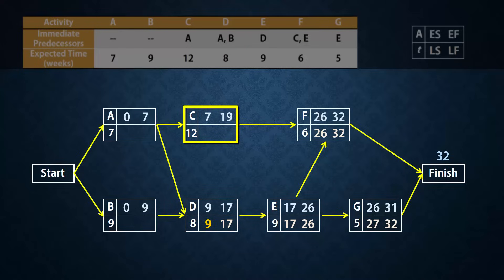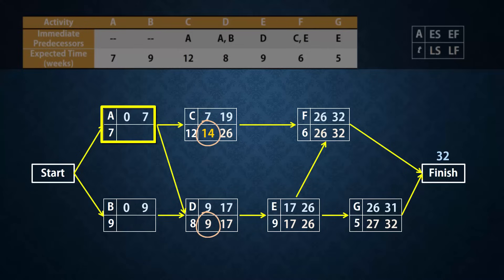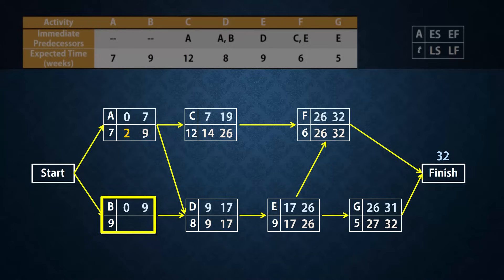Activity C has one successor, F. Therefore, the latest finish will be 26 for C, and latest start will be 14. A has two successors, C and D. The minimum of their latest starts is 9. So the latest finish for A will be 9, and its latest start will be 2. Activity B has one successor, D, with latest start of 9. So the latest finish for B will be 9, and its latest start will be 0. The backward pass is now complete.